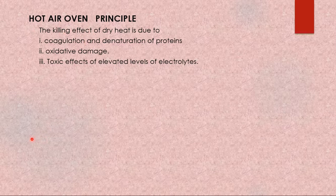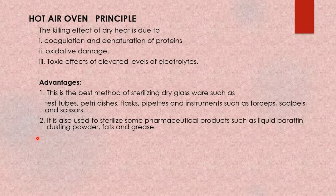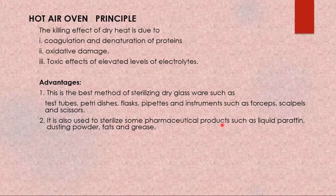The hot air oven is the best method for sterilizing glassware such as test tubes, petri dishes, flasks, and pipettes, and instruments like forceps, scalpels, and scissors. It is also used to sterilize pharmaceutical products such as liquid paraffin, dusting powder, fats, and grease.